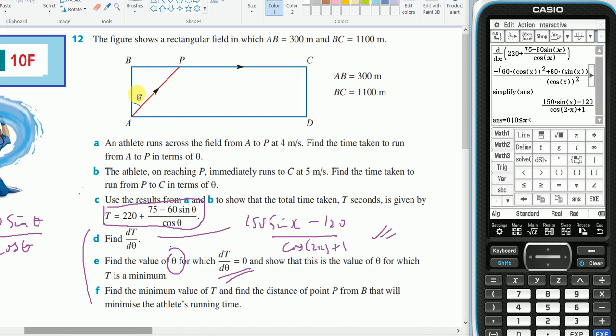And since theta can only really go up to 90 degrees, I'm in radians so I'll put pi on 2. And then solve that.